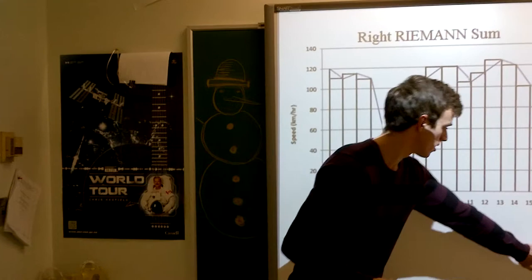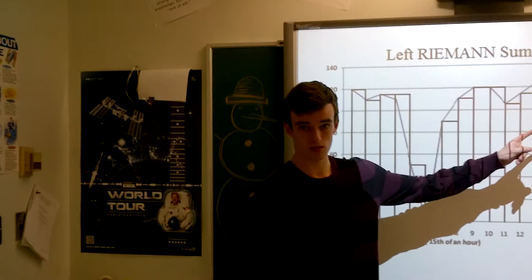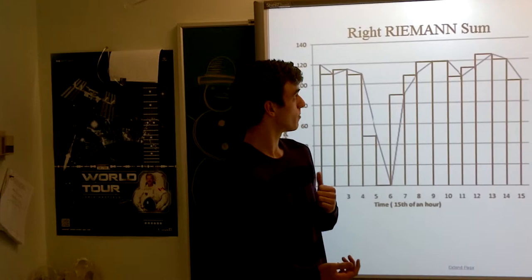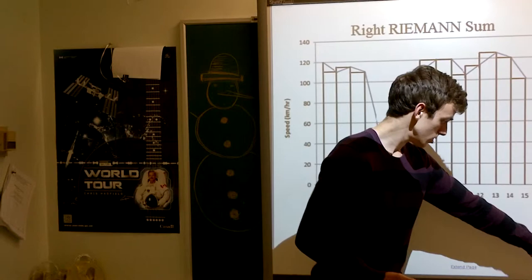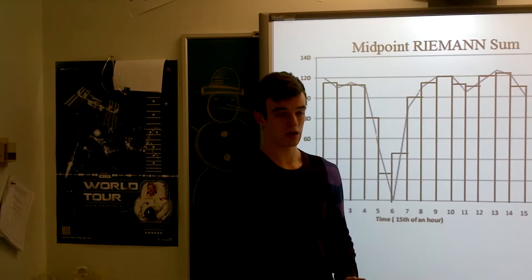In each method, I found that the estimate was relatively close to what I actually traveled. For the Left Riemann sum, I got an estimate of 93.67 kilometers, which was my upper estimate. For my Right Riemann sum, I got an estimate of 92.63 kilometers, which was also an upper estimate. For the Midpoint Riemann sum, I got 93.3 kilometers, which was my mid estimate. The total distance that I actually traveled was about 93 kilometers.